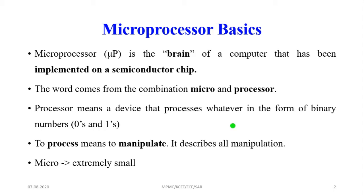Micro means extremely small; processor means it can perform processing in the form of arithmetic and logical operations. The processor is a device that processes data in the form of binary numbers — zeros and ones. To process means to manipulate. We perform arithmetic and logical operations on this data.